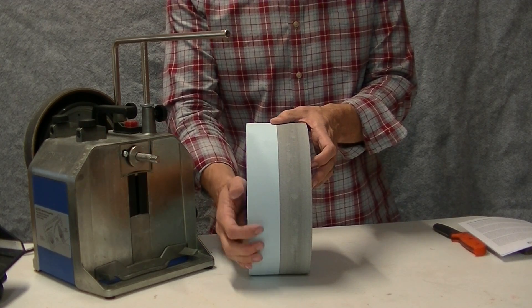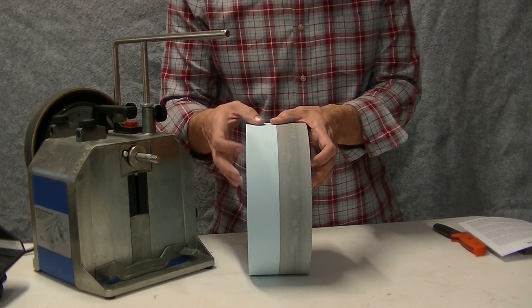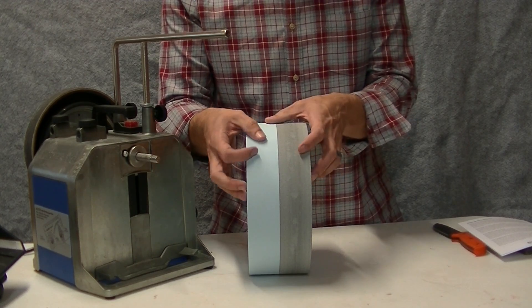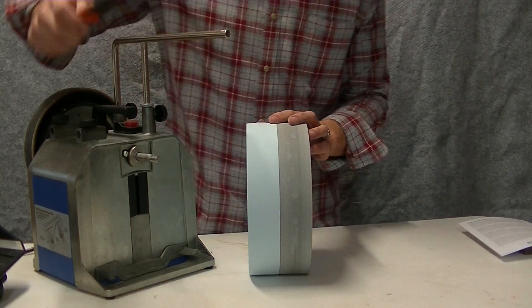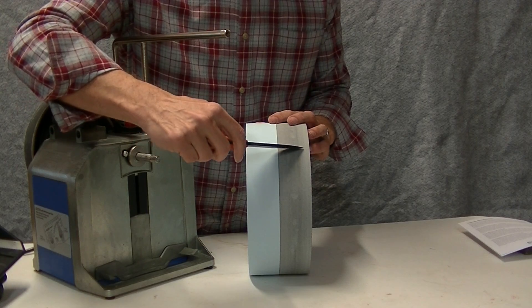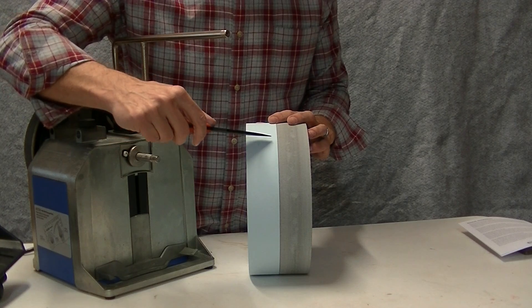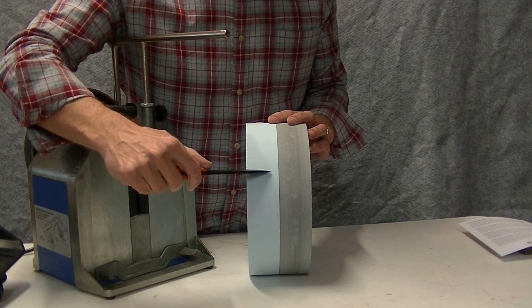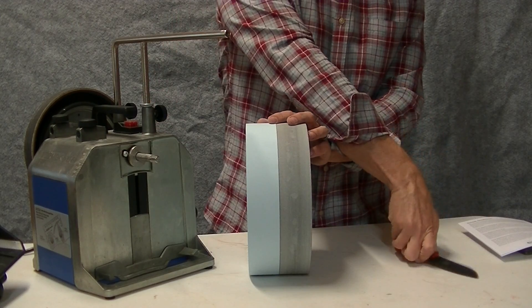On your left here is the Japanese water stone and this is 4,000 grit. The feeling is tremendously different across these two. In fact, if I were to run the knife, we'll see if you can hear this. Okay. That was the thousand grit stone. You can barely even hear any grit or anything on this 4,000 grit stone.